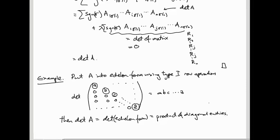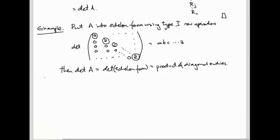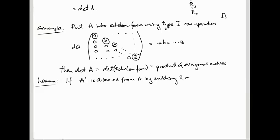So: put A into echelon form using type-one row operations, then det(A) is unchanged, so it equals the determinant of the echelon form, which is just the product of the diagonal entries. If you use other row operations the determinant may change, but it changes in a relatively benign way.